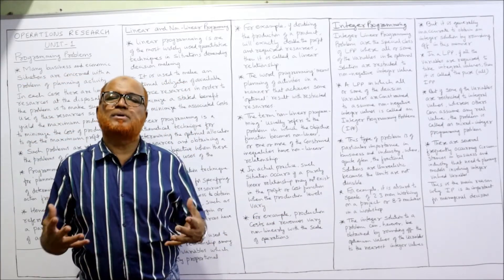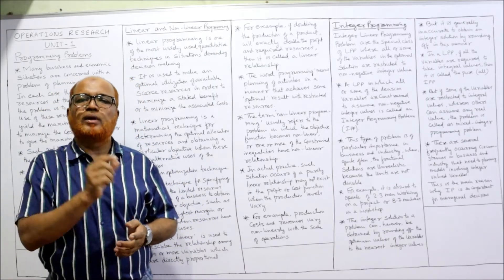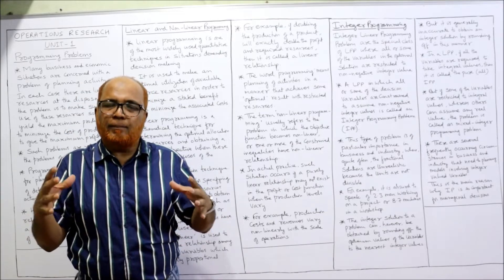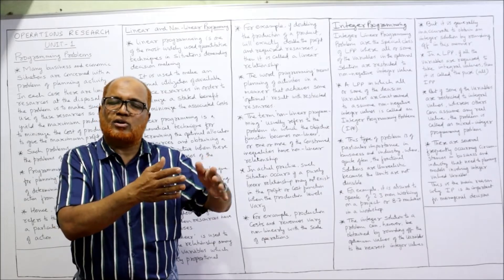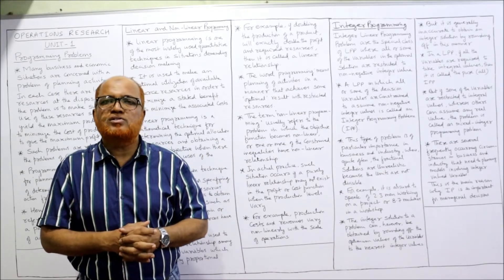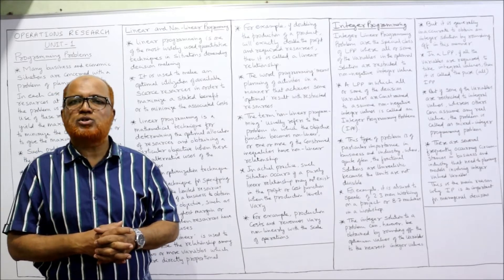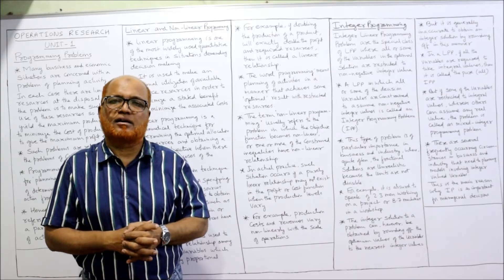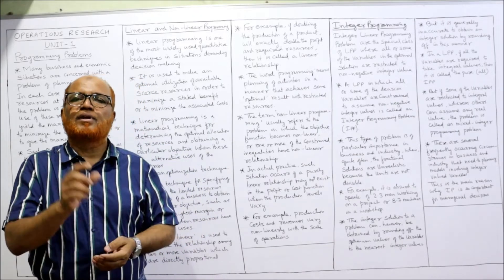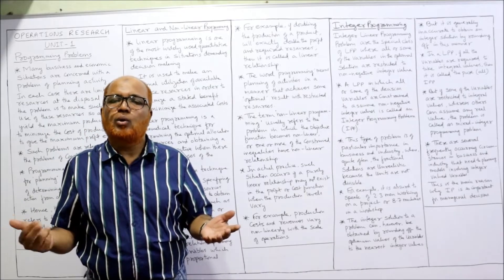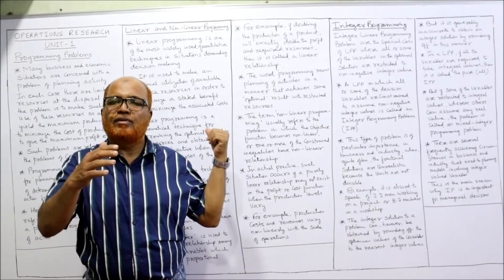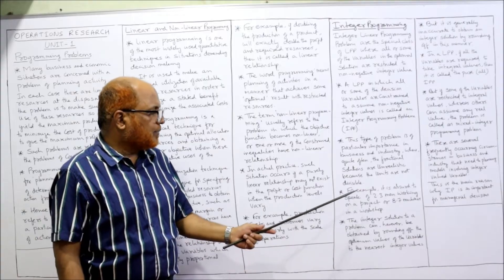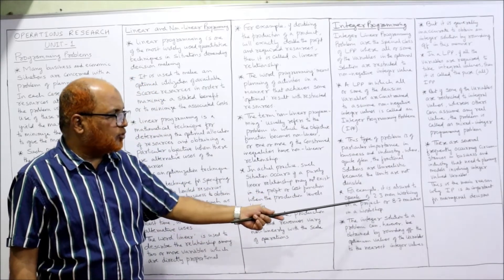In many practical business situations we come across non-divisible units. For example, in AC manufacturing the producer can produce 1 unit, 2 units, or 3 units of AC — but can they produce 1.5 units or 0.75 units? No, fractional units are unrealistic. In those situations we cannot directly apply linear programming; we need the special class of LPP called integer programming. For example, it is absurd to speak of 2.3 men working on a project or 8.7 machines in a workshop.